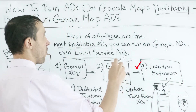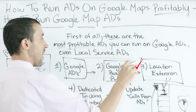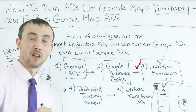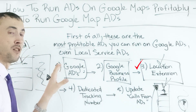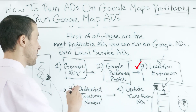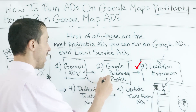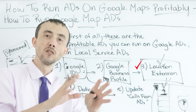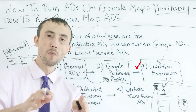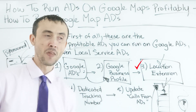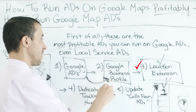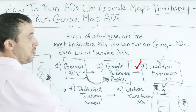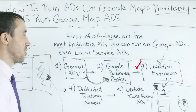The third thing you need for Google Maps ads is a location extension on your Google search ad. You need to link your Google Ads account to your Google Business Profile so that when you set up the location extension, your business address from your Google Business Profile actually shows up. You can't do a location extension effectively without linking those accounts together.